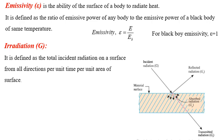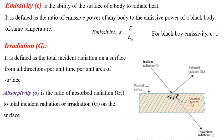As shown in the sketch, incident radiation G strikes a material surface. A fraction of radiation is reflected back, a fraction is absorbed, and a fraction is transmitted. For most surfaces when radiation is incident on a body, part is absorbed, part is reflected, and the remaining part is transmitted.